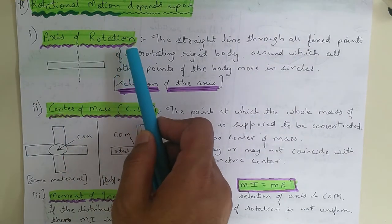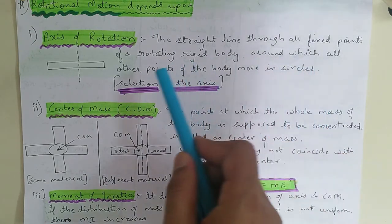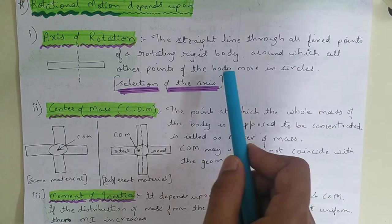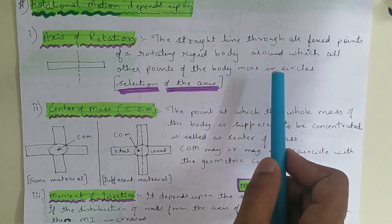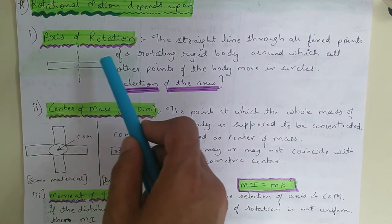Okay now what does axis of rotation mean? The straight line through all fixed points of a rotating rigid body around which all other points of the body move in circles.